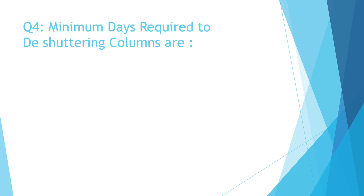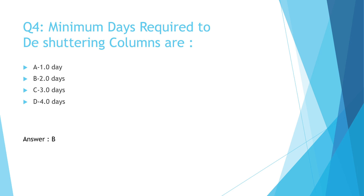Question number 4: Minimum days required for de-shuttering columns are — a. 1 day, b. 2 days, c. 3 days, d. 4 days. The correct answer is b. 2 days.